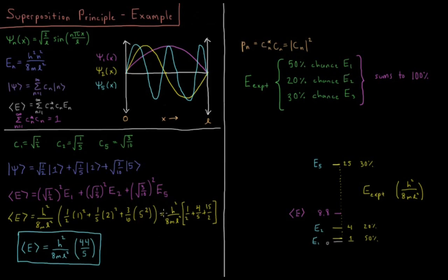Summing all those terms up, we get h²/8mL² × (1/2 + 4/5 + 15/2), and that fraction sums to give the final result: the average value of energy is h²/8mL² × 44/5. This factoring is natural because the energy of each individual eigenfunction is always some multiple of h²/8mL² — it's 1 for n=1, 4 for n=2, and 25 for n=5.